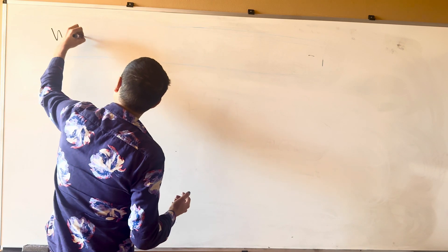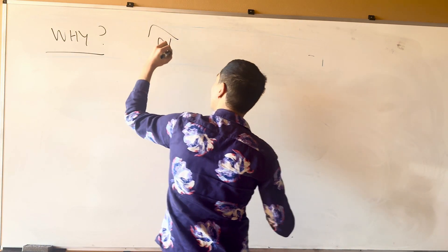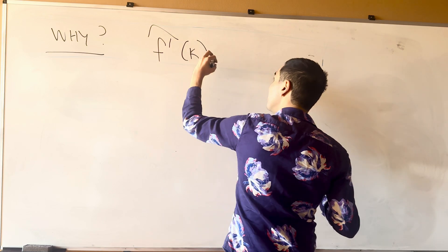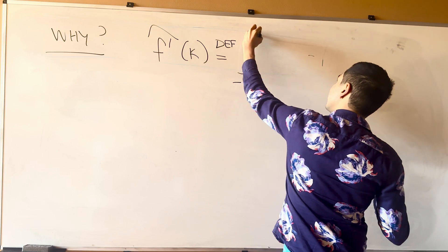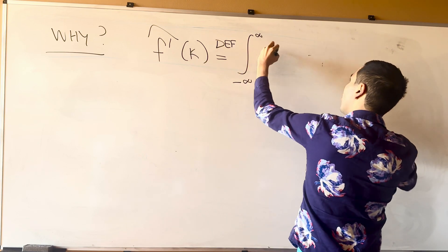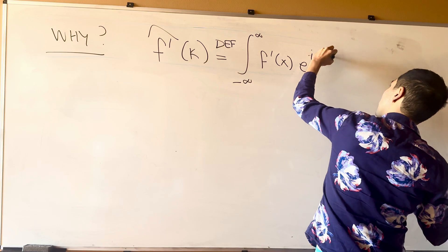So why is that true? Well, let's take the Fourier transform of f prime. Well, by definition, this is the integral from minus infinity to infinity of f prime of x, e to the i kappa x dx.